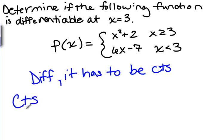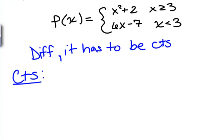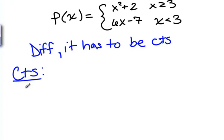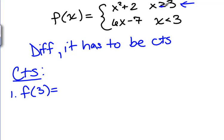Let's look at continuity. For a function to be continuous it needs to have three things. First, the function value has to be defined — F of 3 has to be defined — and in our case it is. You plug 3 into the top function because that's where the equal sign is, so we get 3 squared plus 2, which is 11.